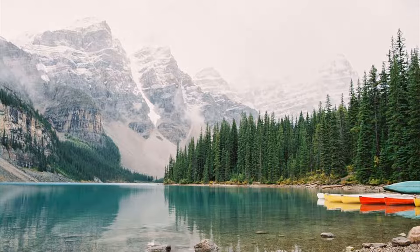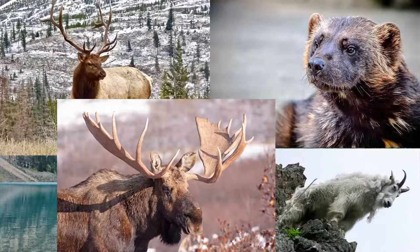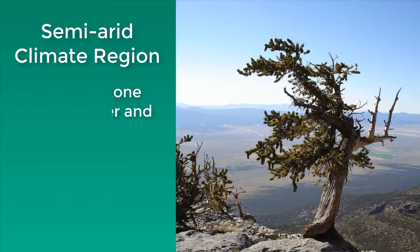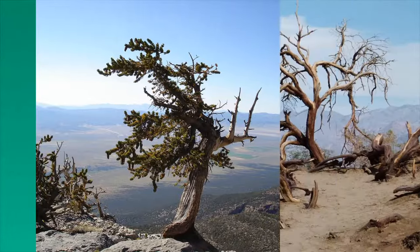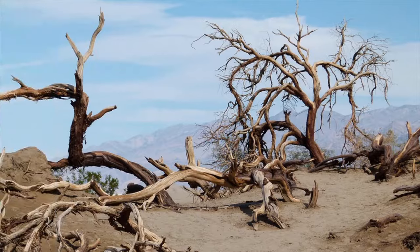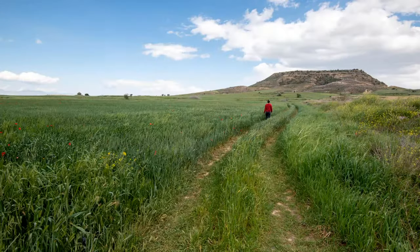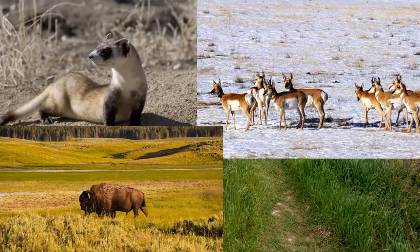Some of the animals found in highland ecosystems of the western United States are the wolverine, bighorn sheep, mountain goat, moose, elk, mule deer, black bear, grizzly bear, and gray wolf. The semi-arid climate region, a sort of transitional zone between drier and wetter areas, includes wide swaths of sagebrush typical of the Great Basin, which lies between the Rockies and the Sierra Nevada in the American West. The dominant ecosystems here are the desert scrub — home to the chipmunk, jackrabbit, and kangaroo rat — and the temperate grassland of the Great Plains, home to the black-footed ferret, pronghorn, bison, and coyote.